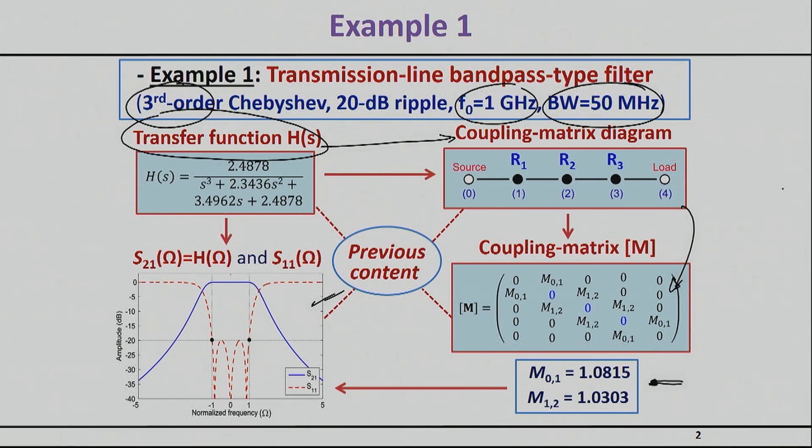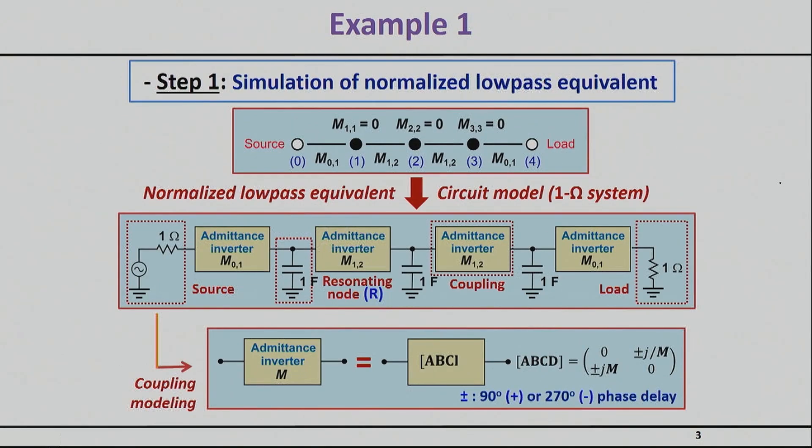This is something that's basically textbook and all of you should be able to do that. Then we have learned that I can start synthesizing the actual circuit that will implement this by essentially using inverters. We need four inverters for a third order filter, and then by using these normalized components that will very quickly become resonators once we denormalize this from this domain to the actual frequency domain.